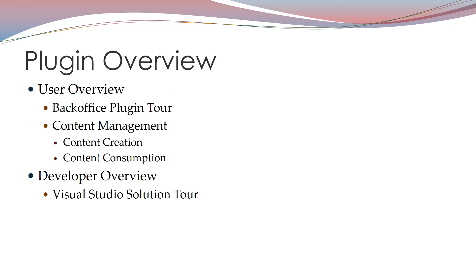We're going to take a quick overview of the plugin. The overview has two parts. First, we'll start with an overview of the plugin from a user's perspective. This consists of a tour of the back office to see the plugin, how it's organized to maintain a list of book products. We'll then take a look at the content section and page creation to use the plugin, adding the page to site navigation and viewing the page on the site. The second part is a developer overview - we'll take a look at the Visual Studio solution and the plugin project from a high level view initially.